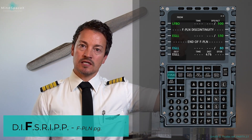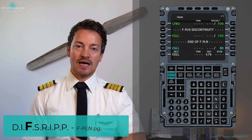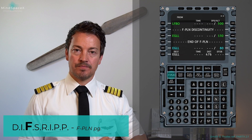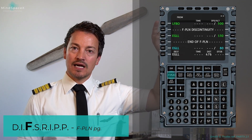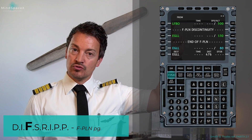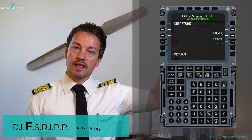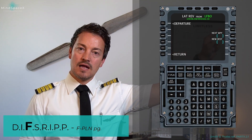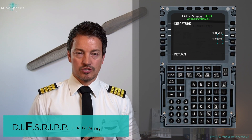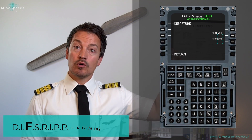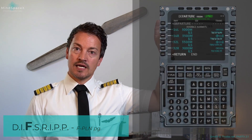Since our flight plan requires us to fill in all the waypoints, that will be the lateral plane. So I am going to do a lateral revision, starting by clicking the lateral revision key next to Lima Foxtrot Bravo Oscar — this is our departure airport. It takes us into this page: lateral revision from Lima Foxtrot Bravo Oscar. I have the option of choosing what I want to do at this waypoint. I want to select a departure, so I click here.